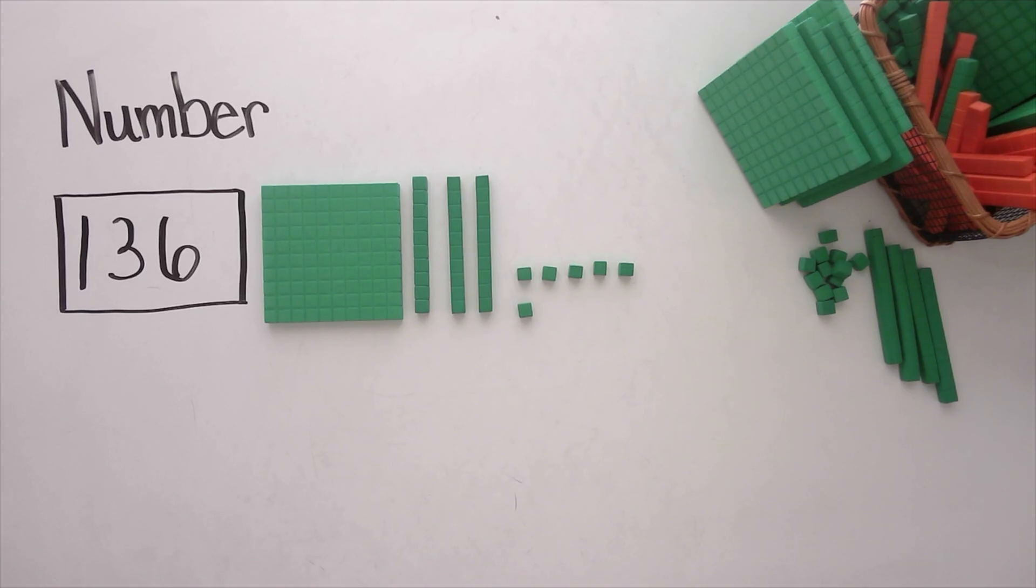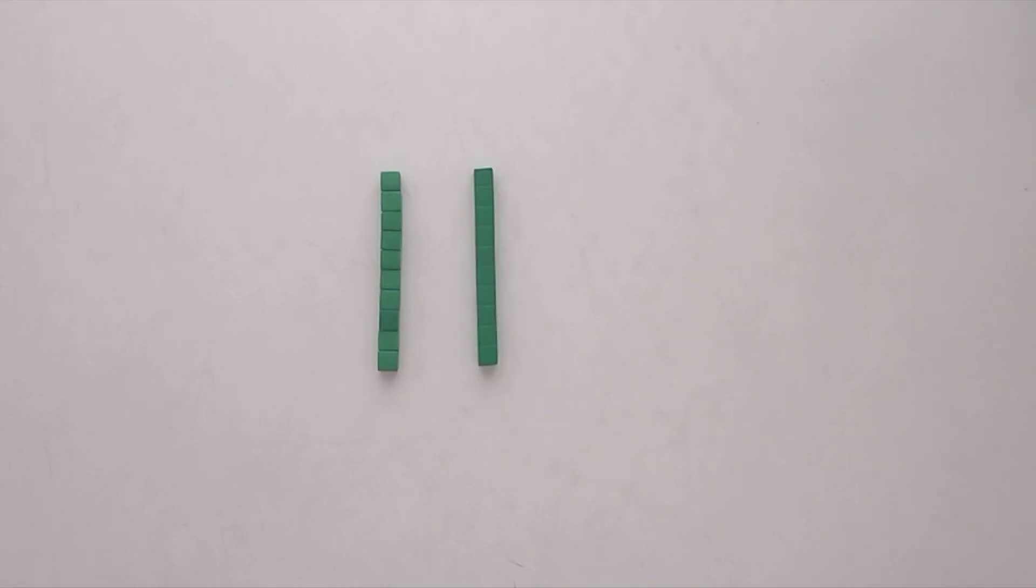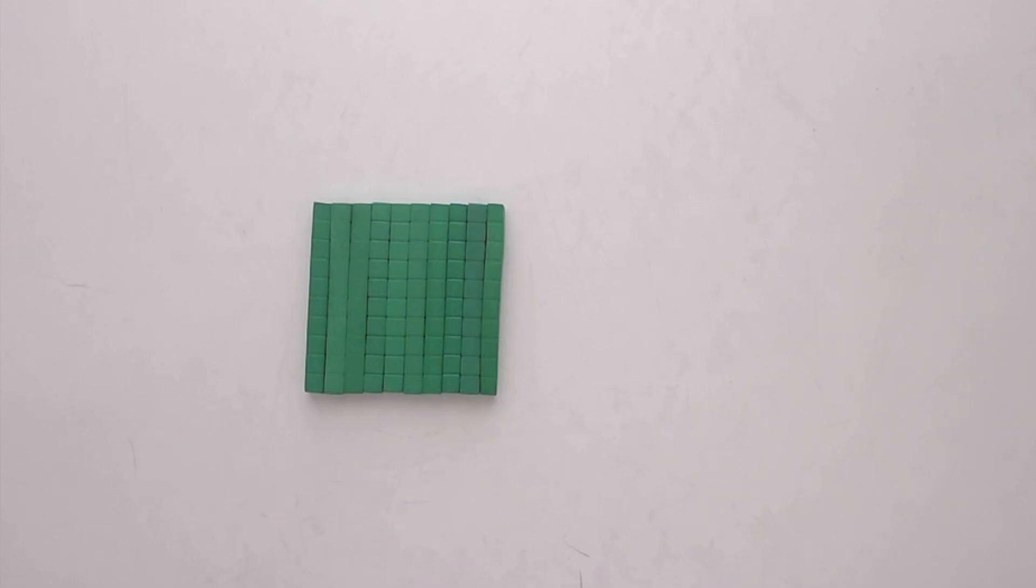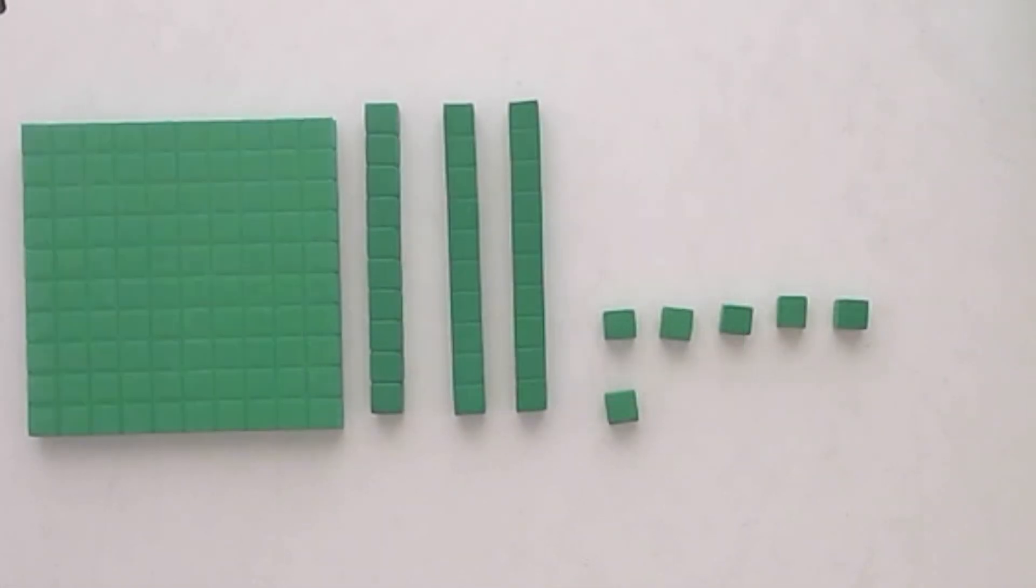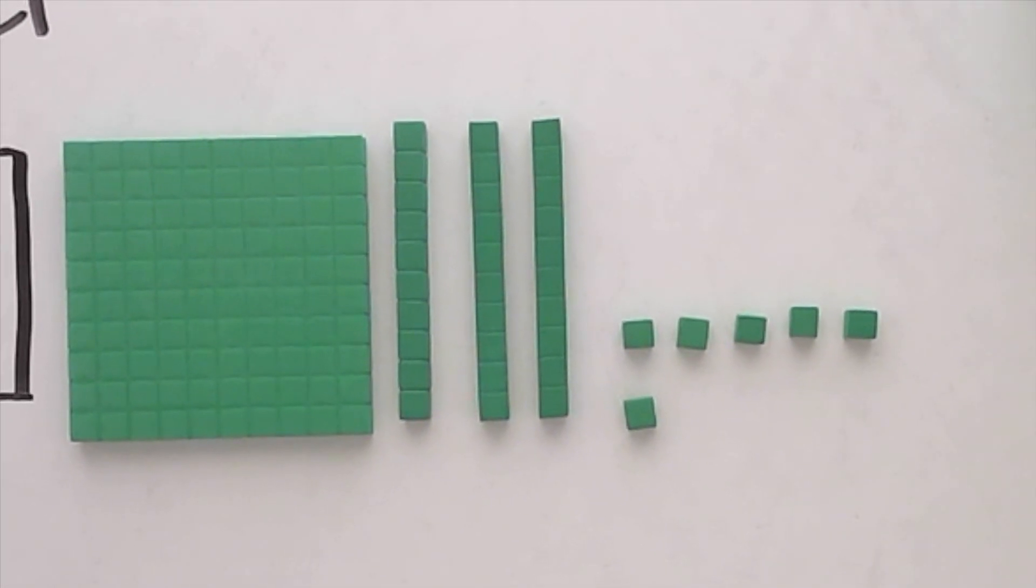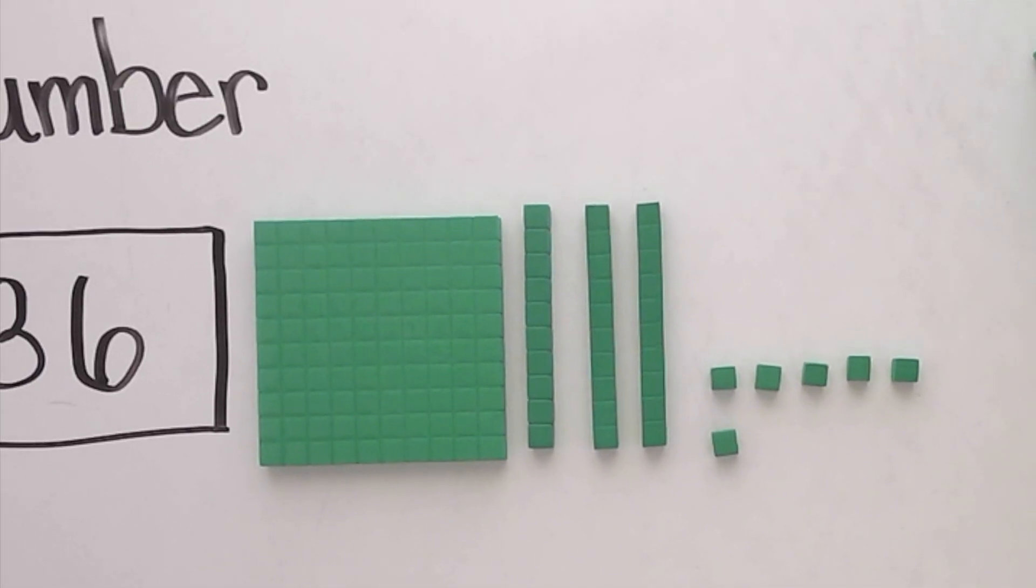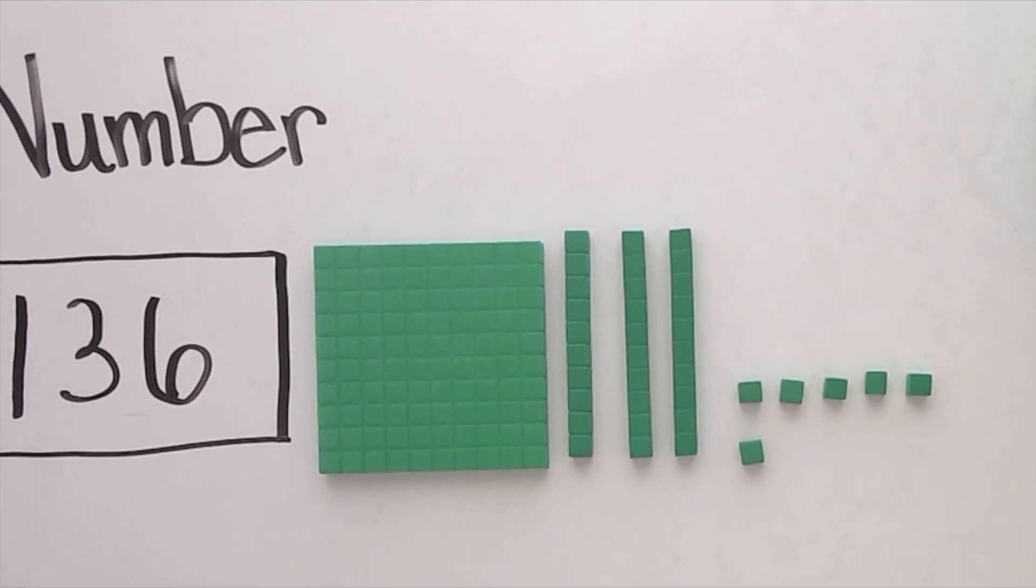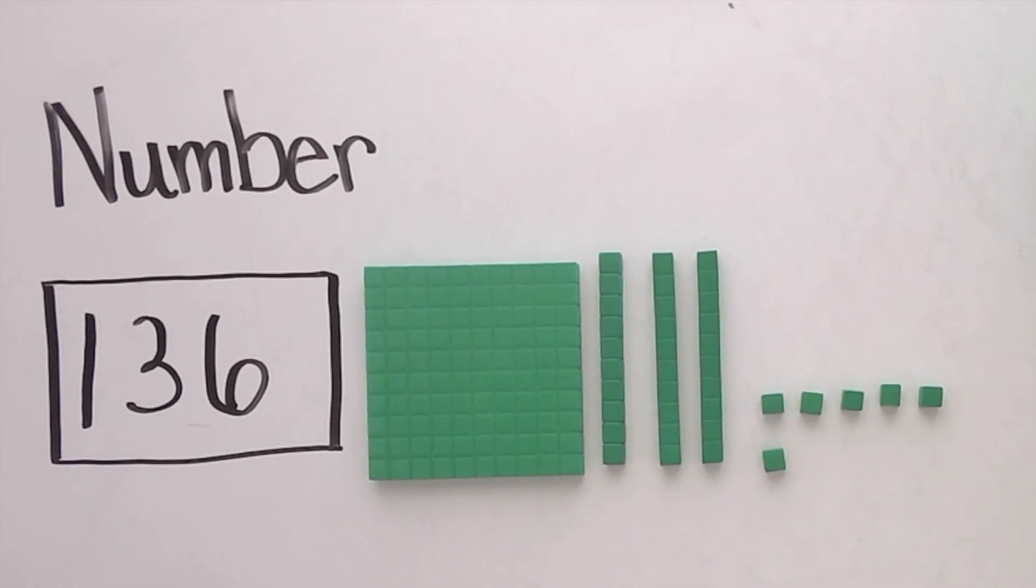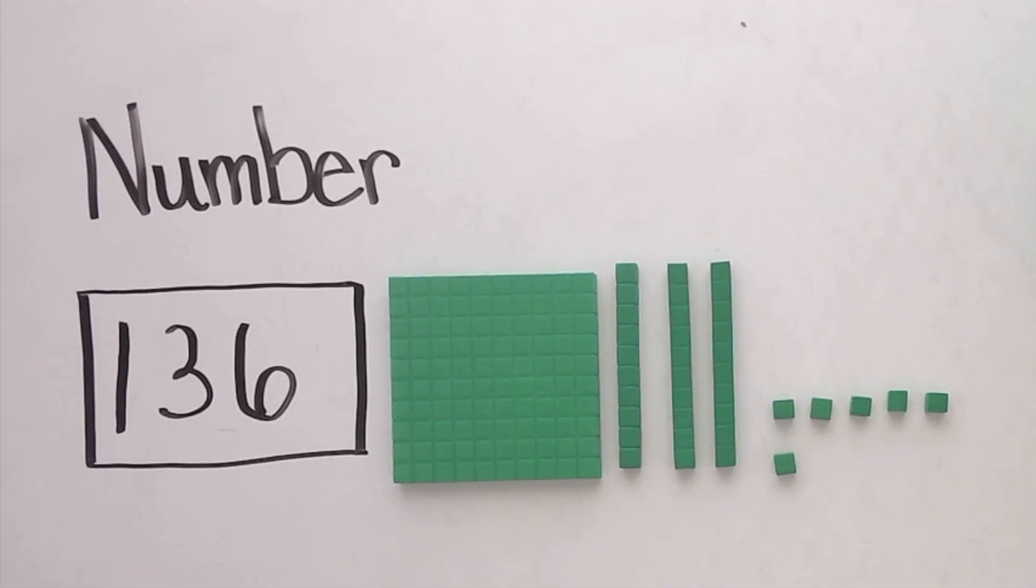In video one of this Base 10 block series, we talked about how each block shows a relationship to the next place value. 10 units make a rod and 10 rods make a flat. Here, building the number gives students a concrete way to see that structure. It turns an abstract symbol like 136 into something they can hold, arrange, and work with.